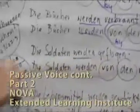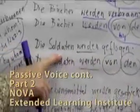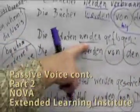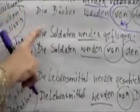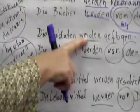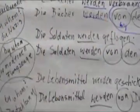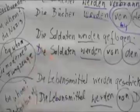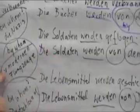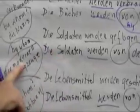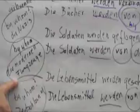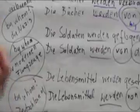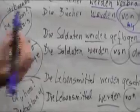Another example. Die Soldaten werden geflogen. The soldiers are being flown. Now, by whom are they being flown? Die modernen Flugzeuge — the modern airplanes. So they're being flown by modern airplanes.